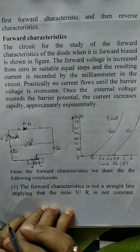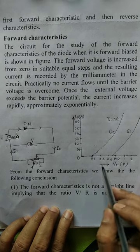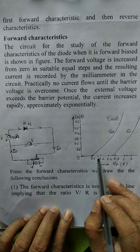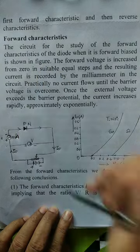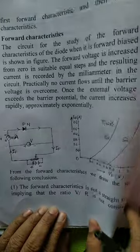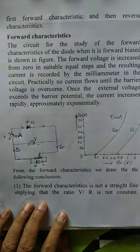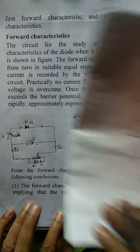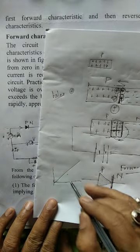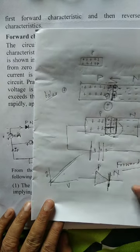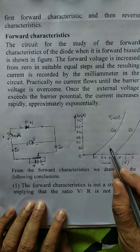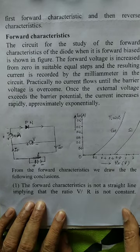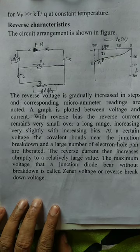Forward characteristics means the variation of current with voltage in a forward biasing situation. One important point: this graph is not a straight line, which means it does not obey Ohm's law, because V/R is not constant.